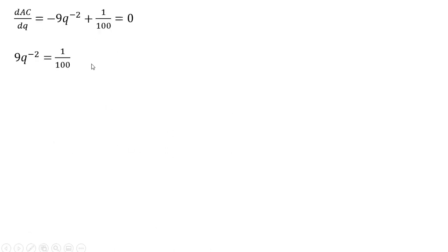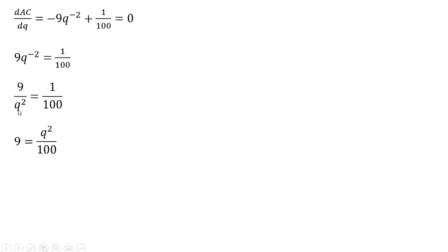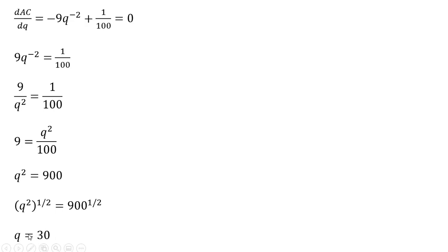Rewriting the result and rearranging: bring the Q to the negative second power down into the denominator, multiply both sides by Q squared, then multiply both sides by 100. We take the square root of both sides — raise both sides to the one-half power — to eliminate Q squared and leave just Q. We're left with Q equals 30.